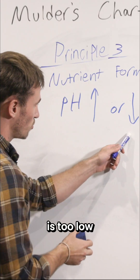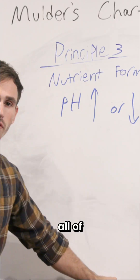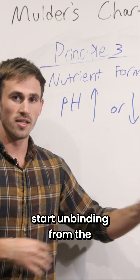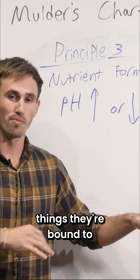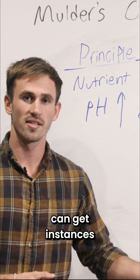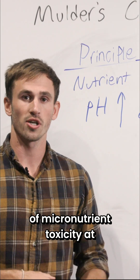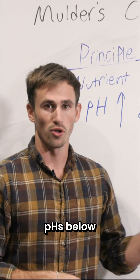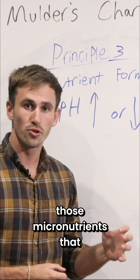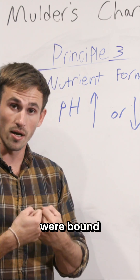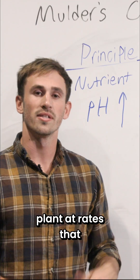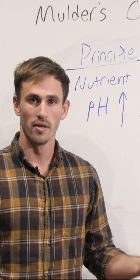If our pH is too low, all of those micronutrients immediately start unbinding from the things they're bound to, and then we can get instances of micronutrient toxicity at pHs below five or so. All of those micronutrients that were bound are now unbound and are entering into the plant at rates that are too high.